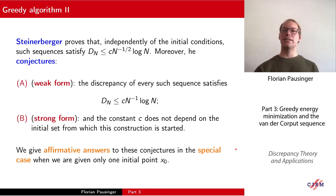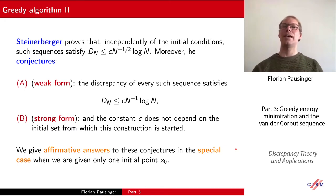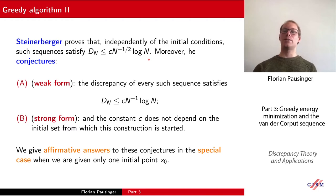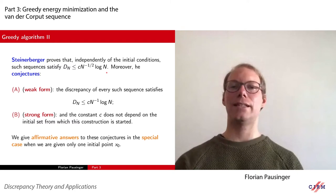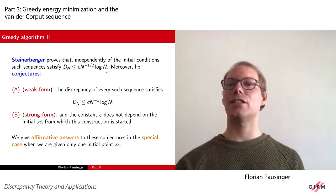Interestingly, Steinerberger proved that independently of the initial conditions — independently of the initial set of endpoints you start with — any such sequence satisfies a discrepancy upper bound of n to the minus one-half times log n. In particular, he did some numerical experiments, and this led him to conjecture that the discrepancy of any such sequence